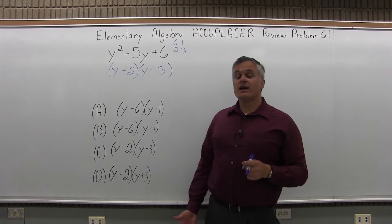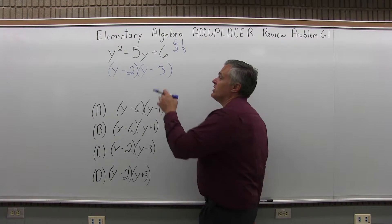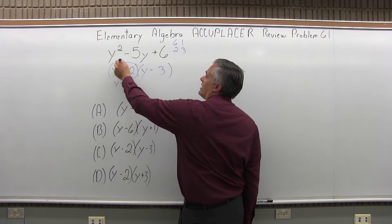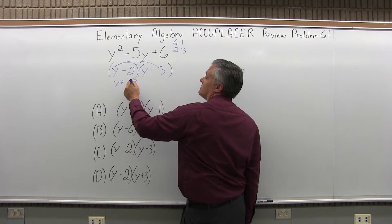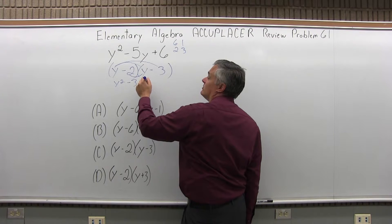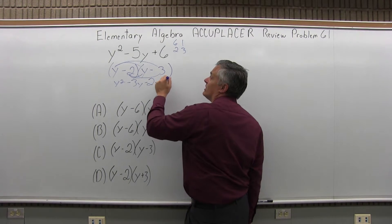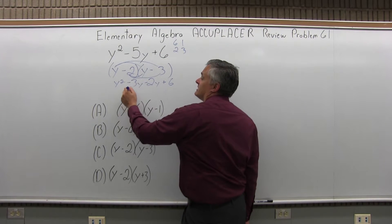But where it's an untimed test, you always have the option of doing some trial and error. You can multiply it out and verify: y times y is y squared, y times minus 3 is minus 3y, negative 2 times y is negative 2y, and negative 2 times negative 3, sure enough, is positive 6.